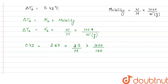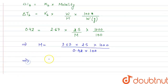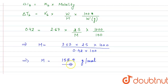From here, we have to calculate M. So M will be equal to 2.67 into 2.5 into 1000 divided by 0.42 into 100. On calculation, we get the molecular mass of the substance as 158.9 grams per mole. This will be the molecular mass of the non-volatile solute. This is the answer.